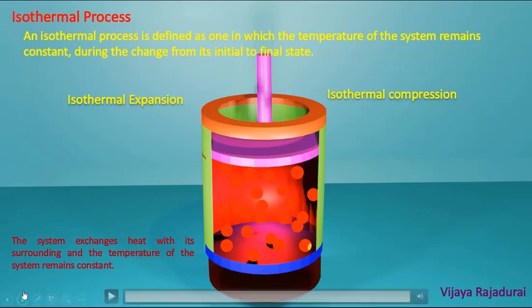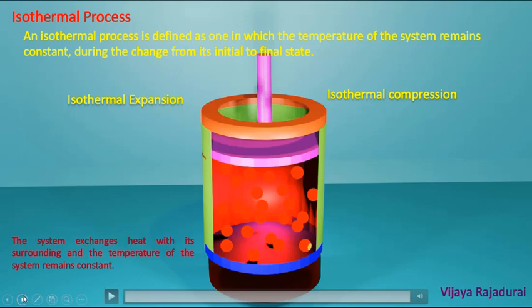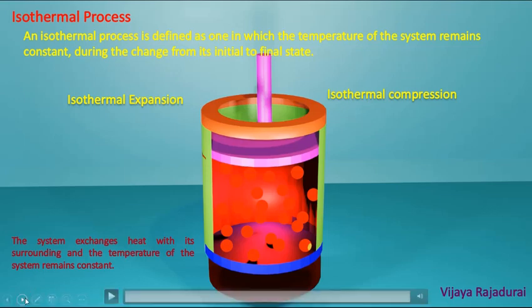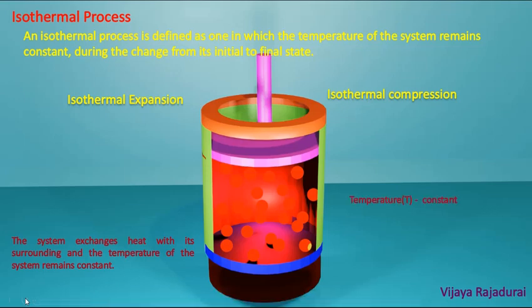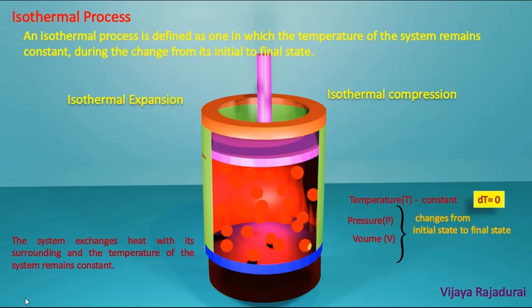In this way we can maintain the constant temperature of the system by transferring heat to the surrounding or transferring heat into the system in isothermal compression and isothermal expansion respectively. We conclude that the temperature of the system is constant in an isothermal process, but pressure and volume change from initial state to final state. So the change of temperature, that is dT, is equal to zero.